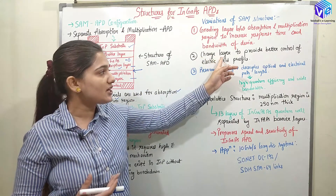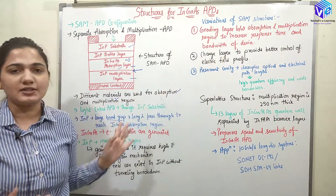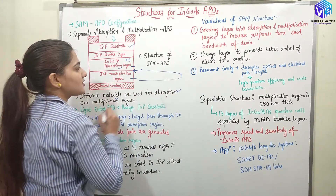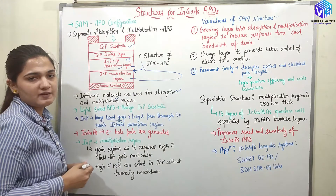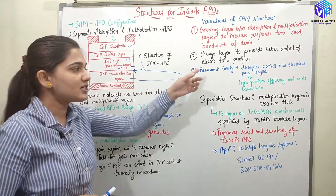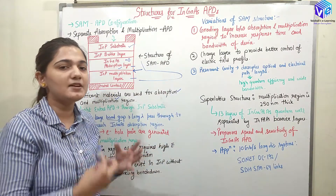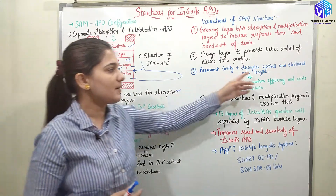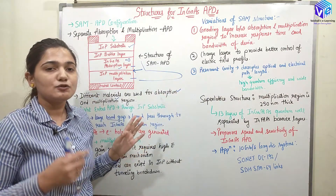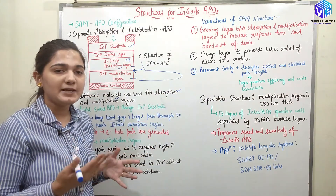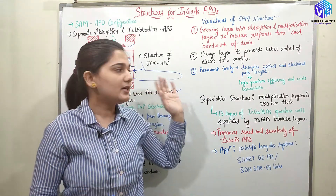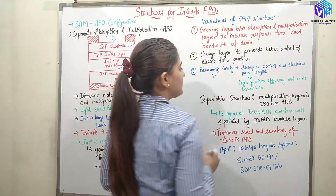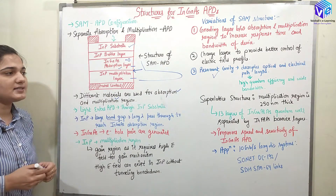After that we can use a charging layer. The charge layer is going to provide better control of the electric field profile. We want a very high electric field in the multiplication region but the electric field in the absorption region should not be very high, so we need to control this profile and the charge layer enables better controllability over it. We can also add a resonant cavity, which is going to decouple the optical and electrical path length, giving us better efficiency as well as wider bandwidth.